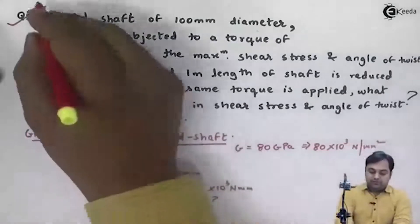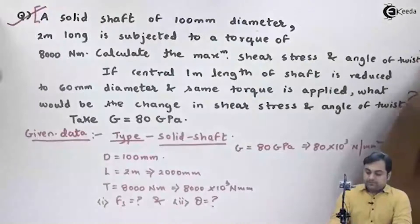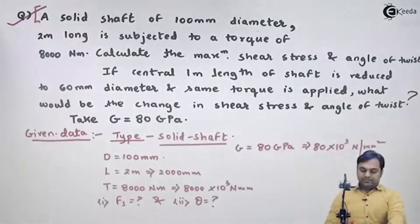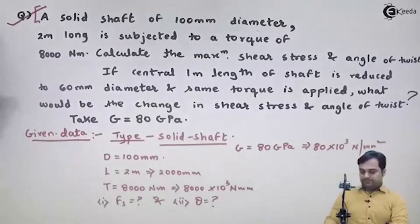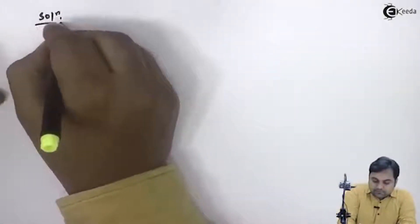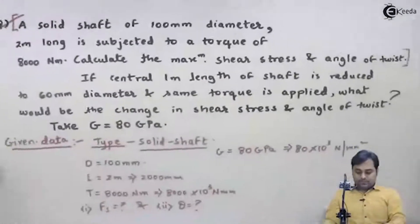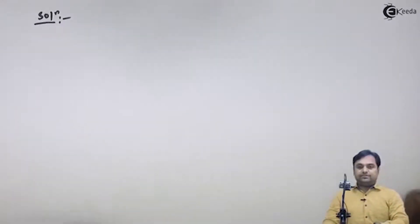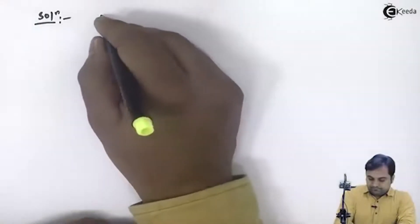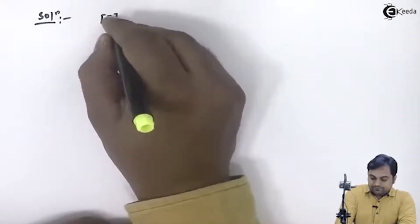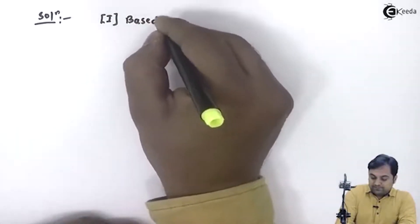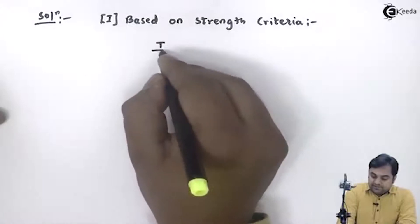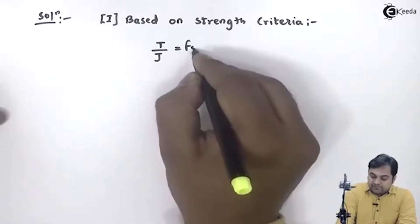First, I will solve the first part of the question — calculating maximum shear stress and angle of twist — and then move on to the second part. Based on the given data, we will start with the solution. The first question is: how much is the shear stress in the solid shaft? Since shear stress is asked, I will use the formula based on strength criteria.